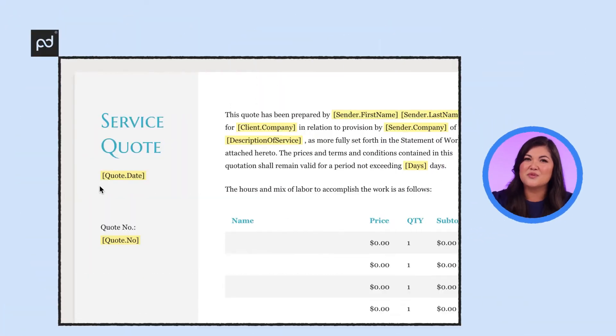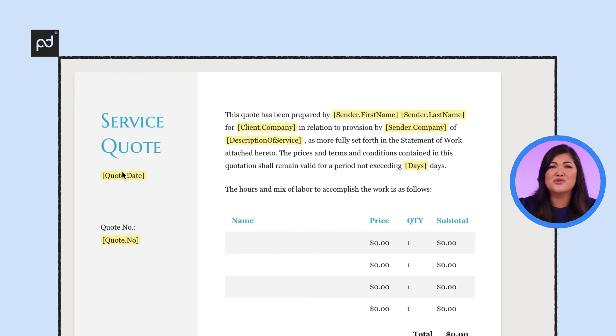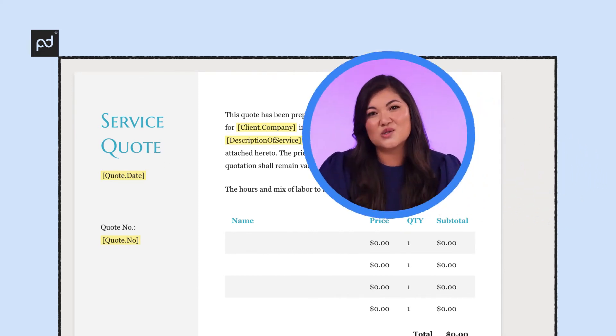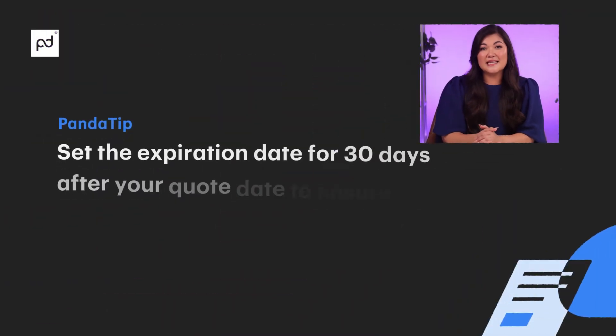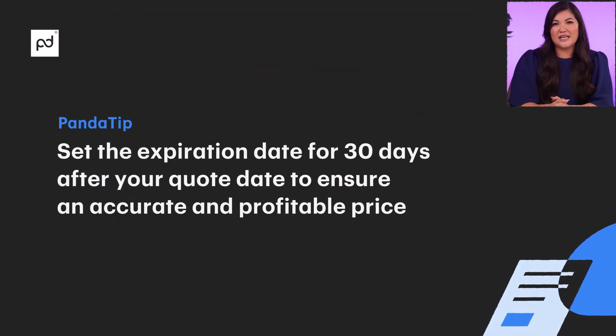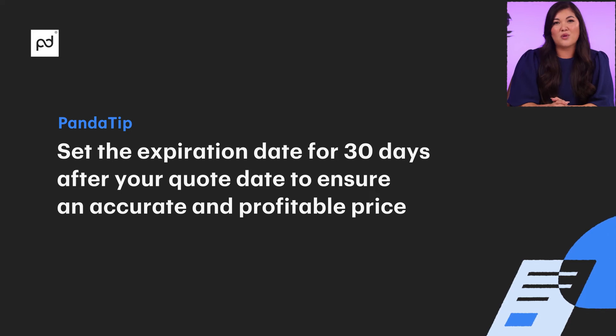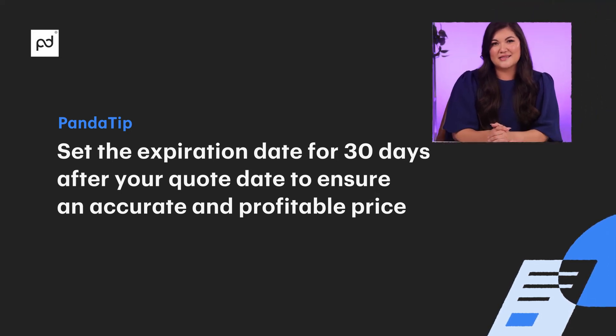Step six: including issue and expiration dates. Issue and expiration dates are super important and yet often overlooked parts of a business quote. Our Panda tip is to set the expiration date for 30 days after your quote date to ensure an accurate and profitable price.